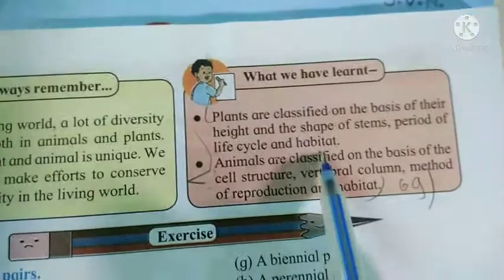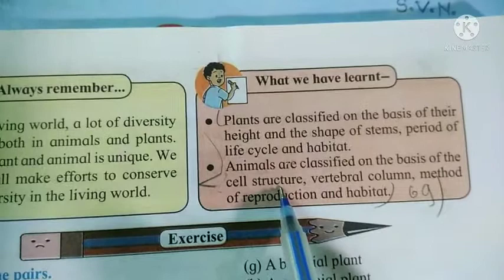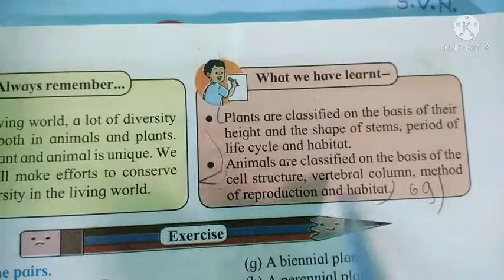Animals are classified on the basis of cell structure — whether unicellular or multicellular — then by vertebral column, and also by method of reproduction and habitat.